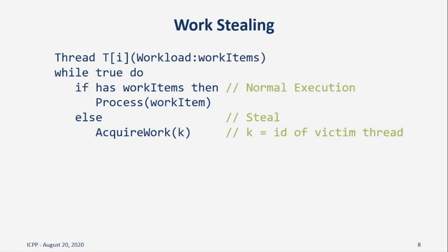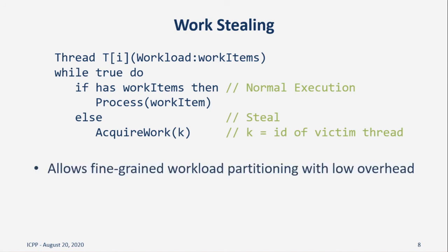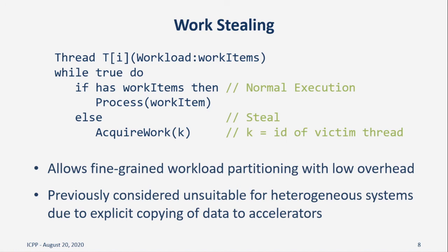Before I discuss HWS, let me first describe work stealing for the benefit of those who might be unfamiliar. Work stealing is a distributed method of dividing work amongst threads in a parallel application. Each thread is initially given a workload to process, and as long as that thread possesses some work, it will continue processing work items as it would normally. When threads run out of work, they simply select another thread and steal some of its workload. We are motivated to select work stealing because it allows for fine-grain work-sharing with low overhead on CPU systems, but it had previously been considered unsuitable for heterogeneous systems, since workloads are normally copied to the FPGA. The ability of the FPGA to read directly from system memory eliminates the need for any explicit data copying, opening up the opportunity of exploring work stealing for balancing workloads on these systems.